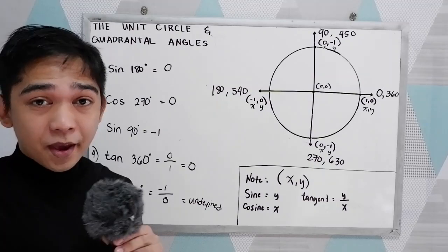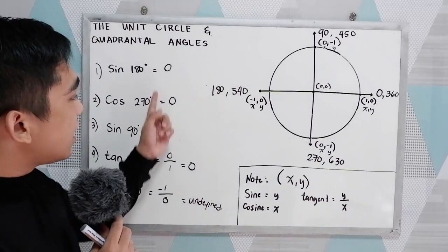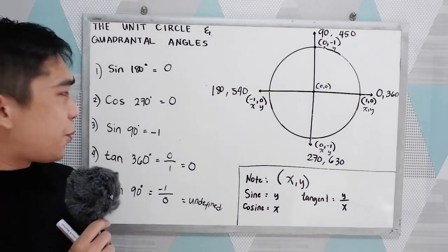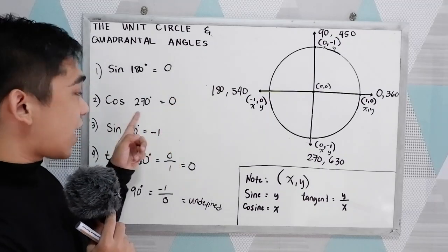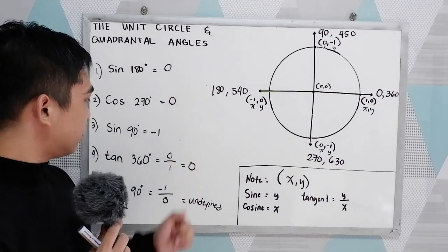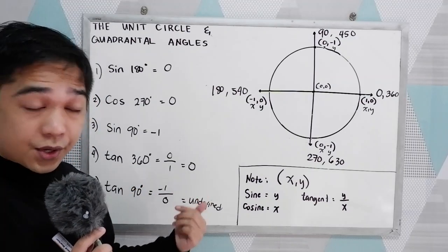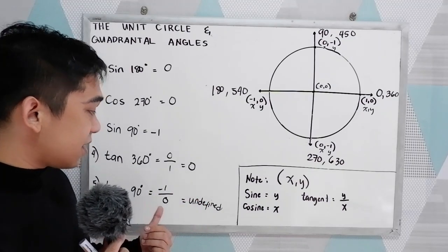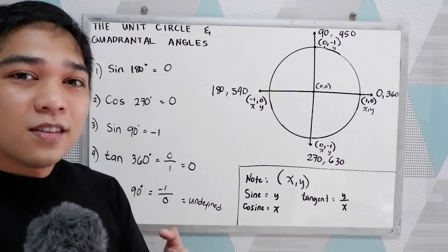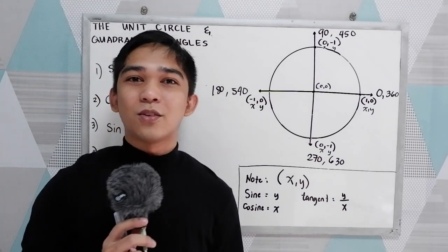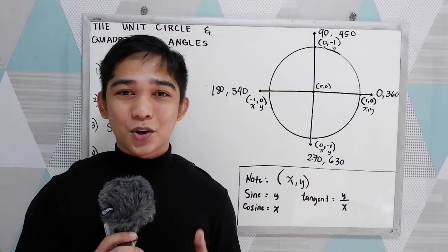Now, for your assignment or task, verify the following using your calculator. Just press sine 180 — is it equal to 0? Cosine 270 — is it equal to 0? Sine 90 — is it equal to 1? Tangent 360 — is it equal to 0? And tangent 90 — is it equal to math error or undefined? Do that in your calculator and you will find out when you enter that in your calculator.